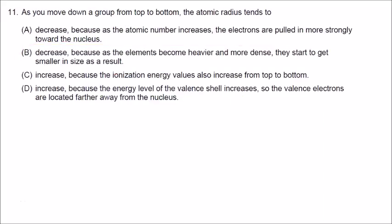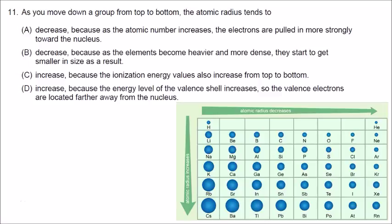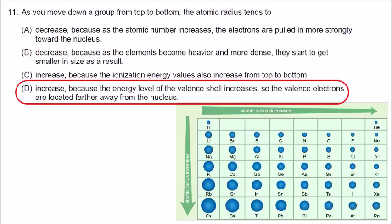Number eleven is about atomic radius going from top to bottom, which increases. So the correct answer is either C or D. Ionization energy does the opposite trend — it decreases from top to bottom. The correct answer is D: the energy level of the valence shell increases, and valence electrons on the outer shell are located farther away from the nucleus as you move up in energy level.